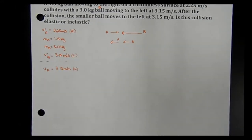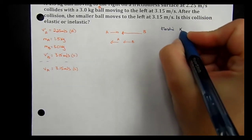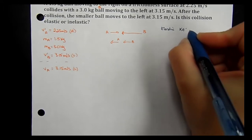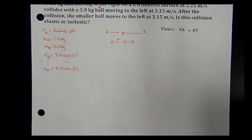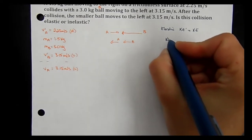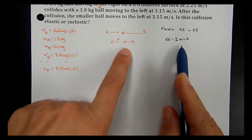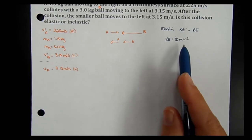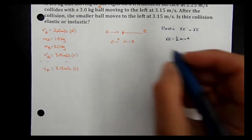So the question is: is this an elastic or inelastic collision? To be elastic, the total kinetic energy at the beginning must equal the kinetic energy at the end — kinetic energy must be conserved. To figure that out, we need to know the velocities of both A and B at the end. We already know the initial values, so let's find the initial kinetic energy.